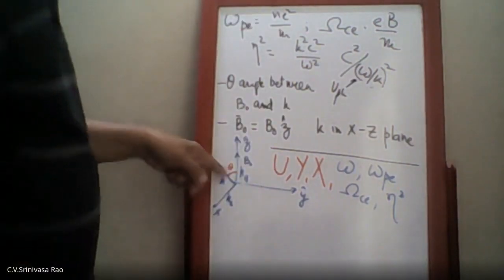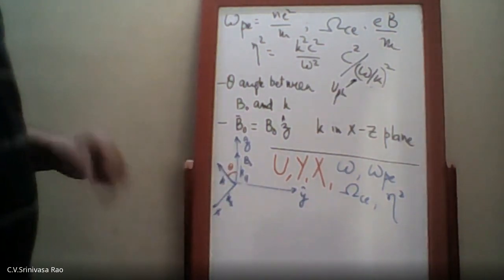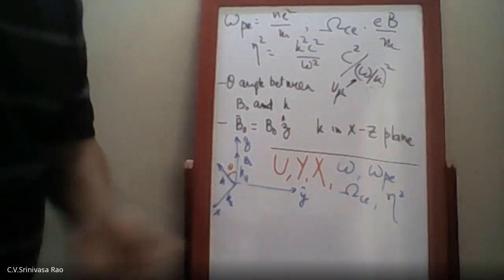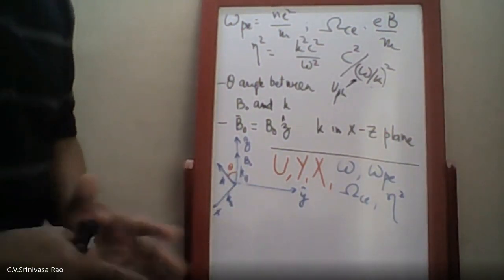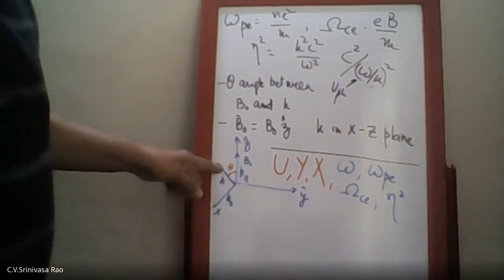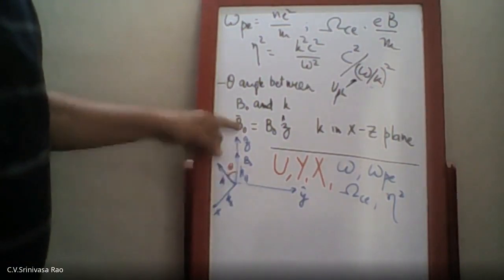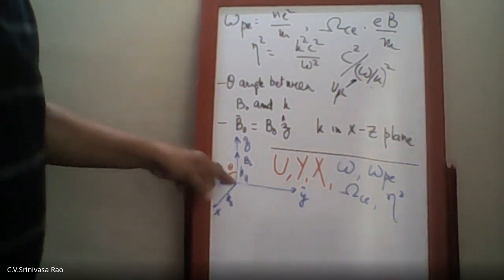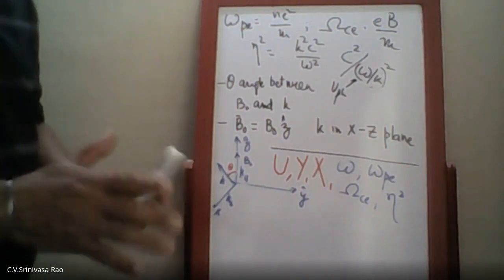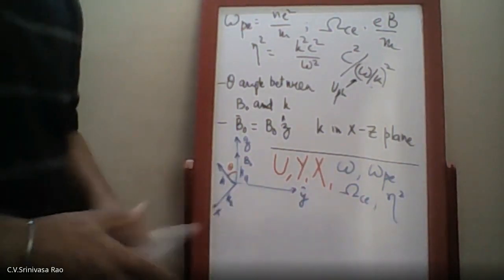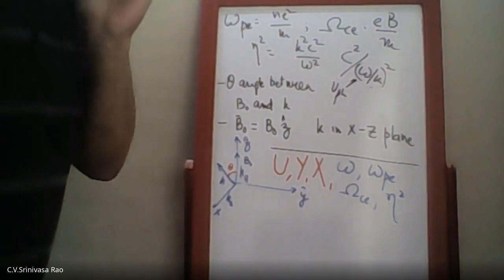Wave propagation in the arbitrary direction, like any angle theta, becomes a little complicated. For simplicity, we will consider theta equal to zero, which is along the field, and perpendicular to the field for 90 degrees. We will see what waves are produced and what the wave propagation properties are for these two cases.